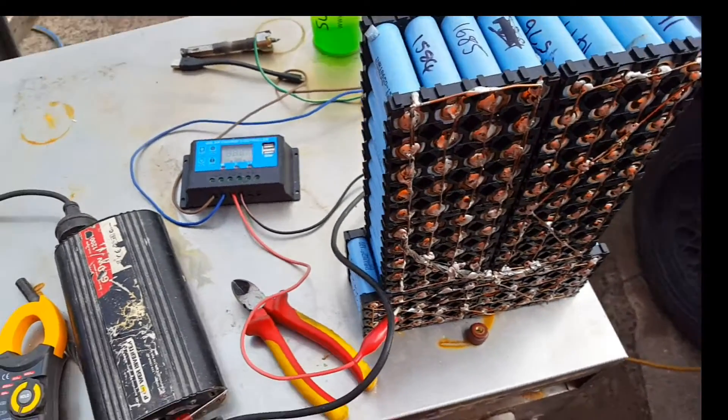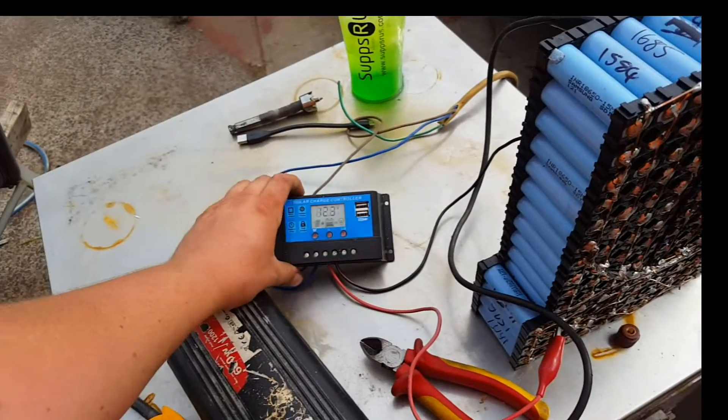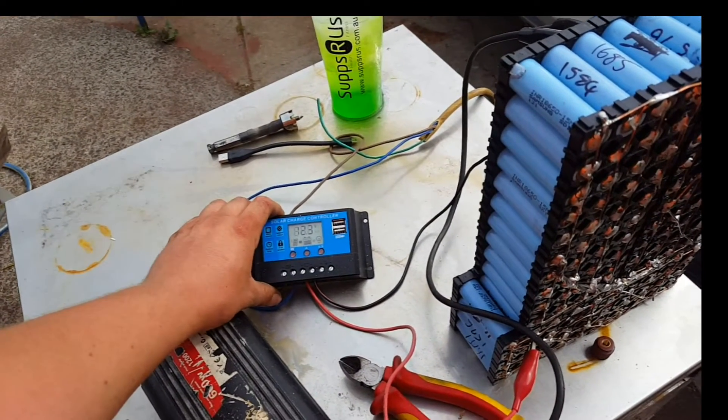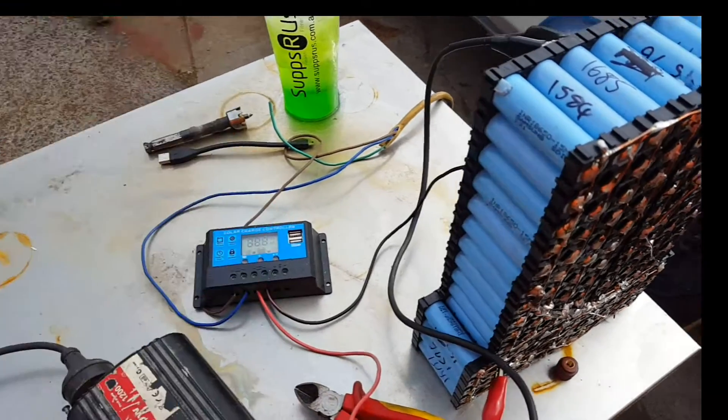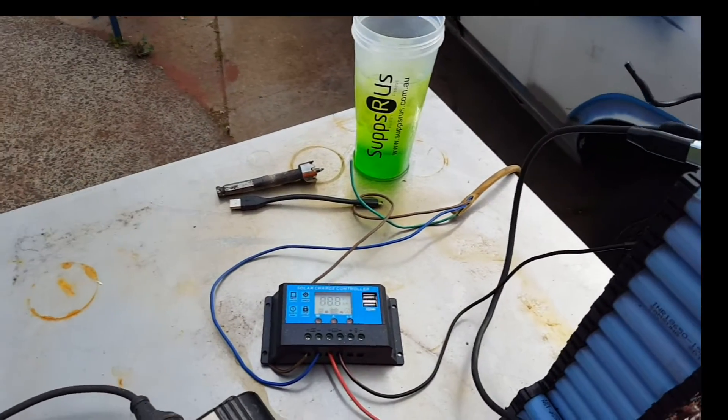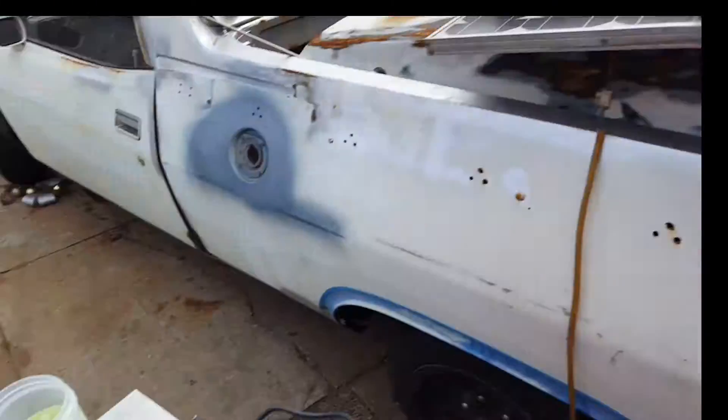So yeah, that's my little pulse width modulation solar charge controller. We'll set all that up inside the house next with the lead acid on it and put that on the roof.